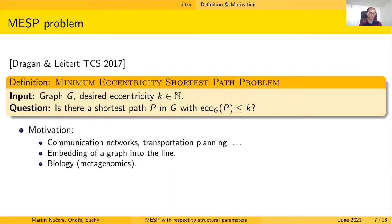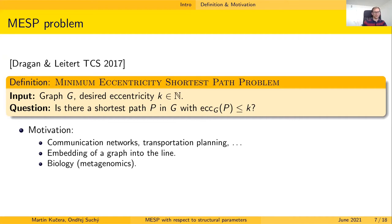Besides the highway application, there are other uses. More surprisingly, the minimum eccentricity shortest path can be used to obtain embeddings of a graph into the line. There are also applications in biology where vertices represent DNA samples connected by edges whenever the samples are similar, and concepts like k-laminarity are closely tied to the minimum eccentricity shortest path.